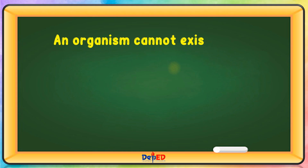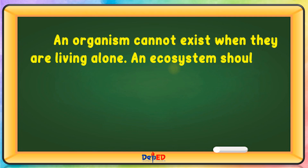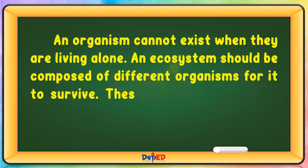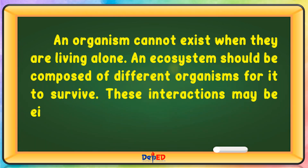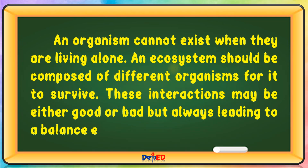An organism cannot exist when living alone. An ecosystem should be composed of different organisms for it to survive. These interactions may be either good or bad, but always leading to a balanced ecosystem.